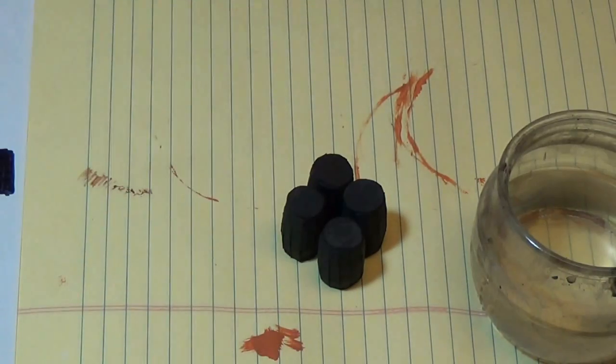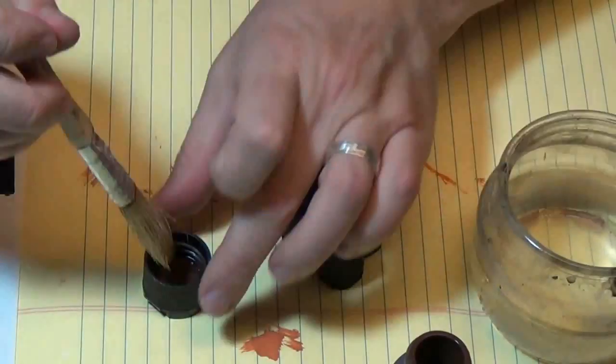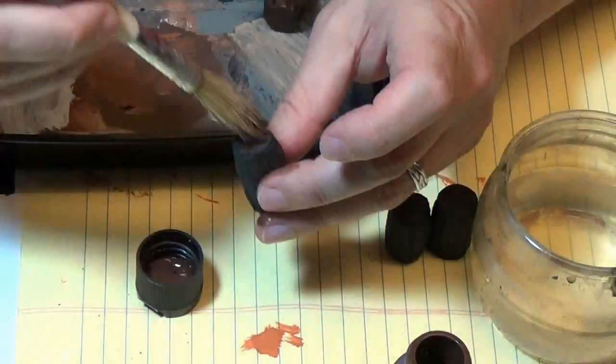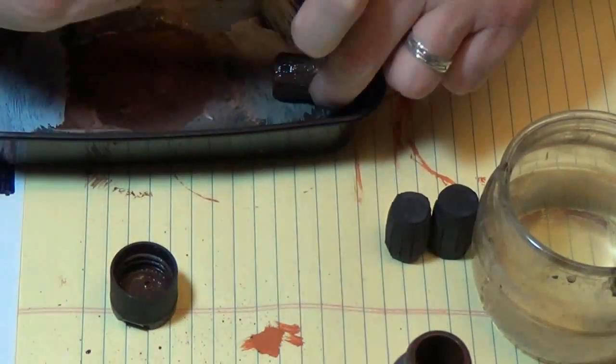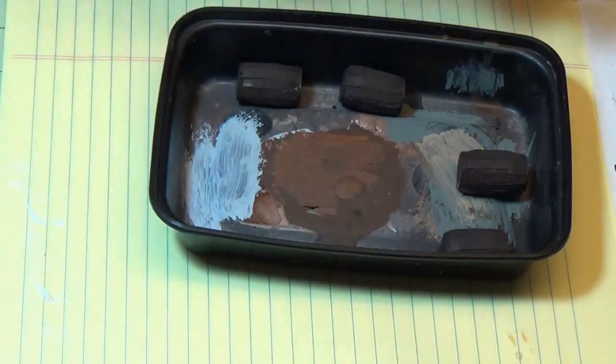Now I've spray painted these black with flat black paint. And I'm going to use a burnt umber and just paint all of these up. And they're all set. I'll let them dry.